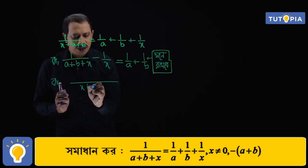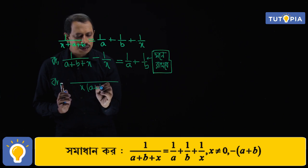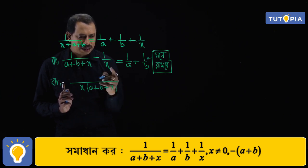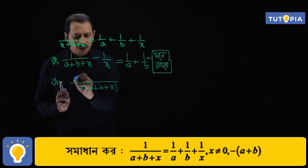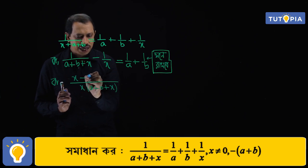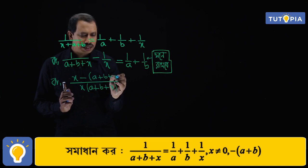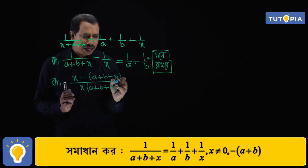Now, cross-multiplying: x into (a plus b plus x) on one side, and (x minus a plus b plus x) on the other side.